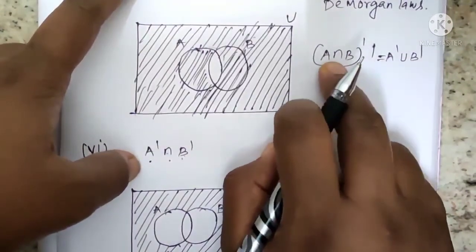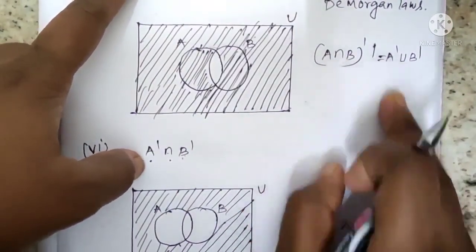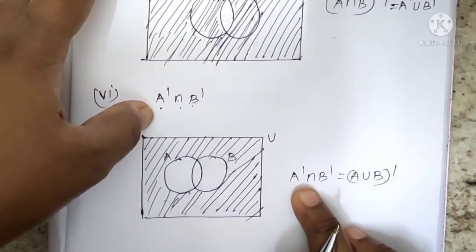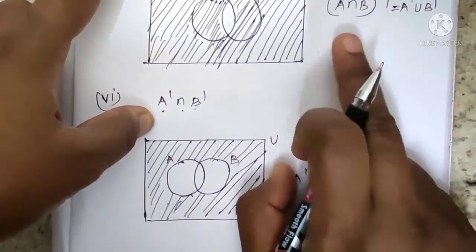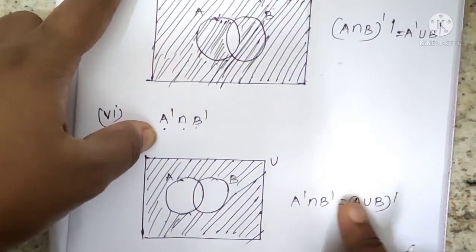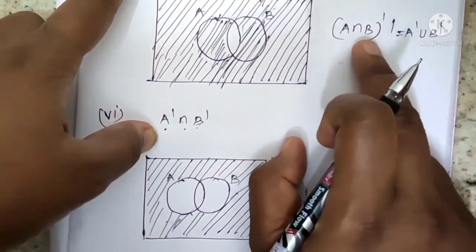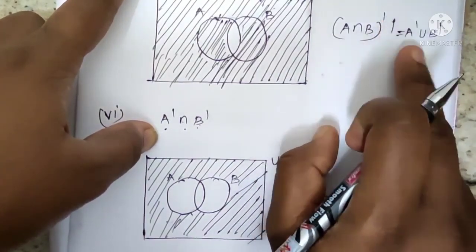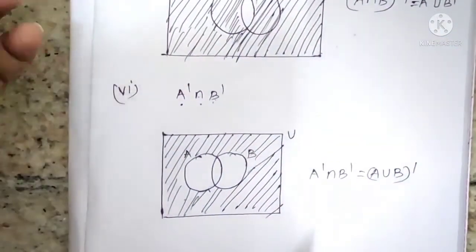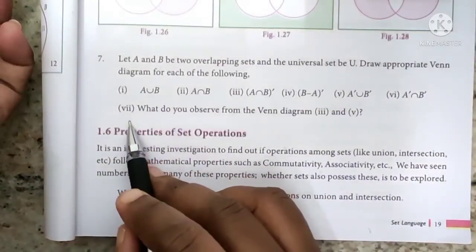De Morgan's Law states: A union B whole dash = A dash intersection B dash, and A intersection B whole dash = A dash union B dash.